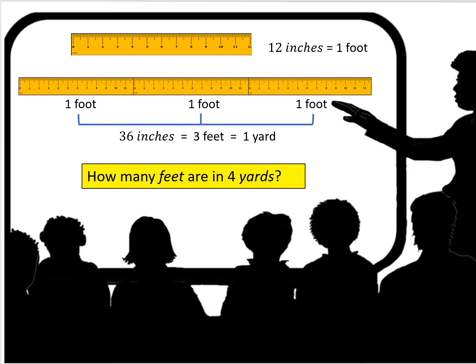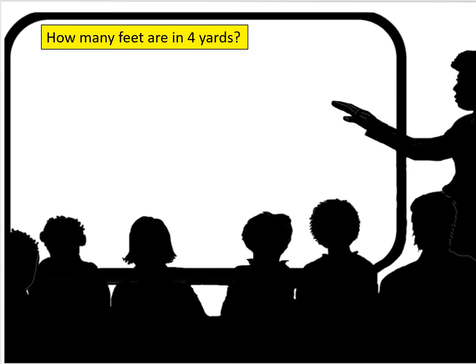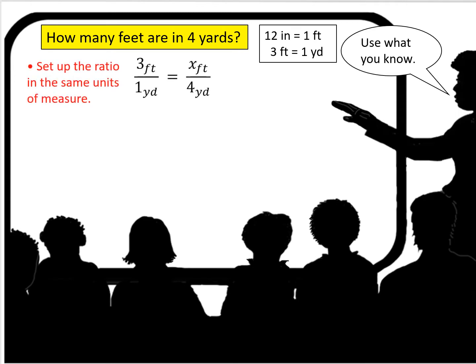So what if we had the problem: how many feet are in four yards? You're going to use what you know. 12 inches equals one foot and three feet equals one yard. You're going to set up the ratio in the same units of measure, feet to yards, because you're looking for how many feet are in four yards. Three feet over one yard is equal to x feet over four yards. When you cross multiply, you can solve for the unknown. So x equals four times three. So the number of feet in four yards is 12.